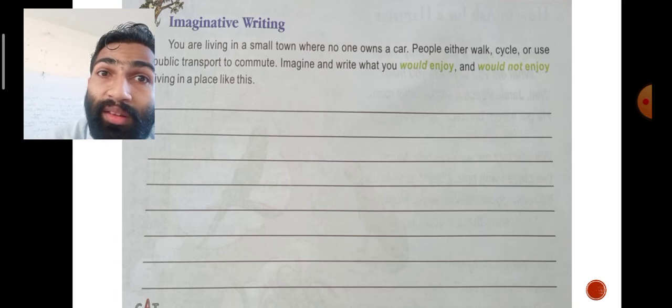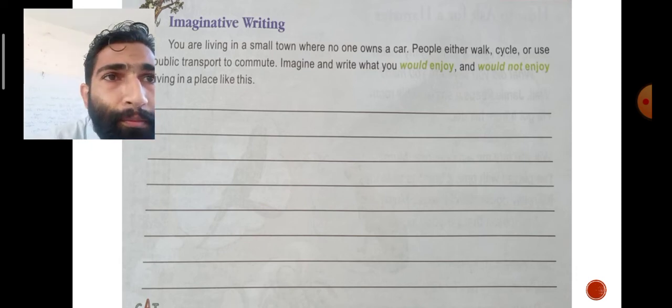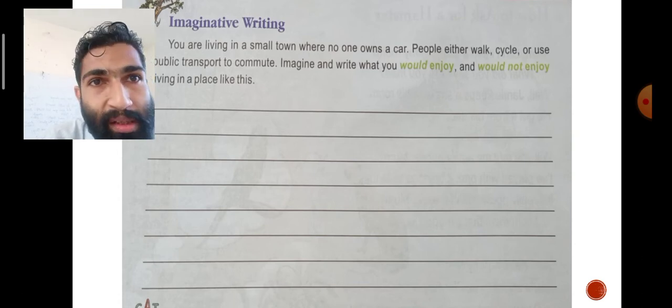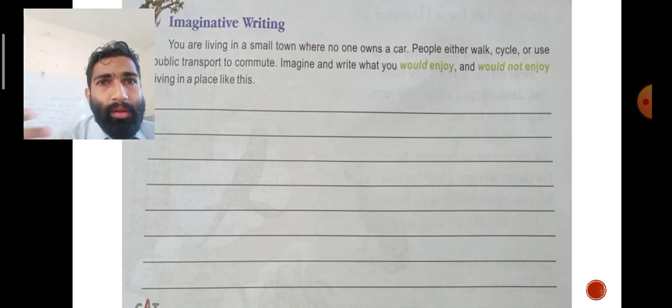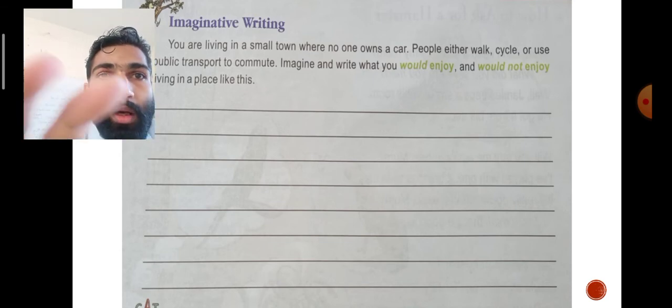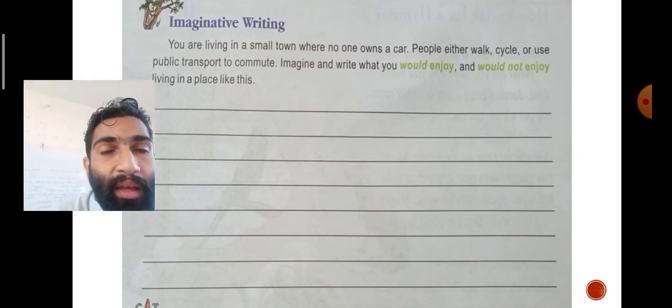Imaginative writing—this is an assignment for you. You are living in a small town where no one owns a car. People either walk, cycle, or use public transport to commute—commute means move from one place to another. Imagine and write what you would enjoy and what you would not enjoy living in a place like this.